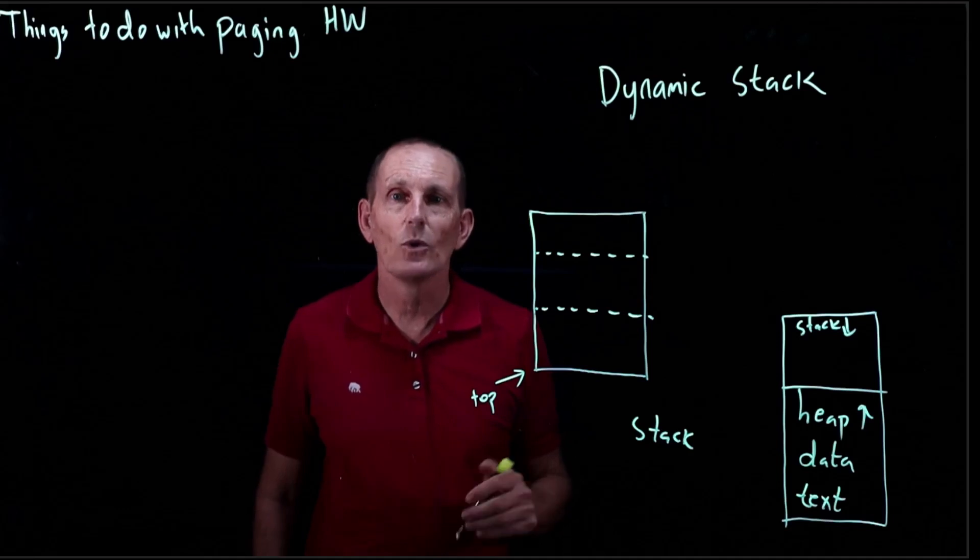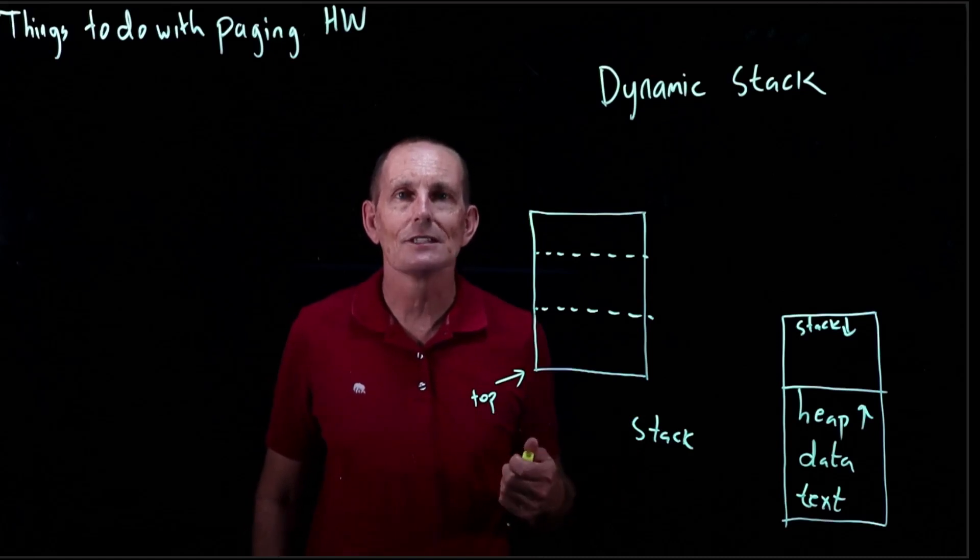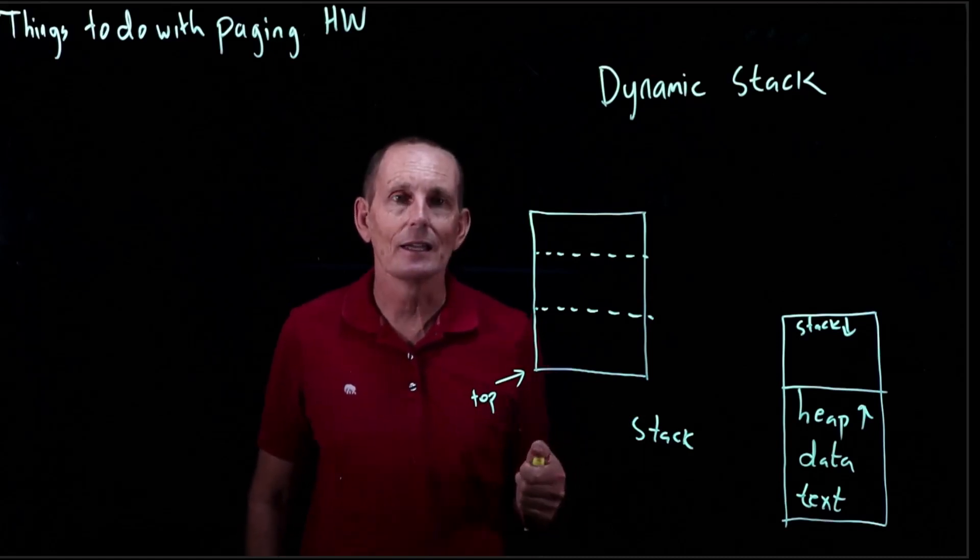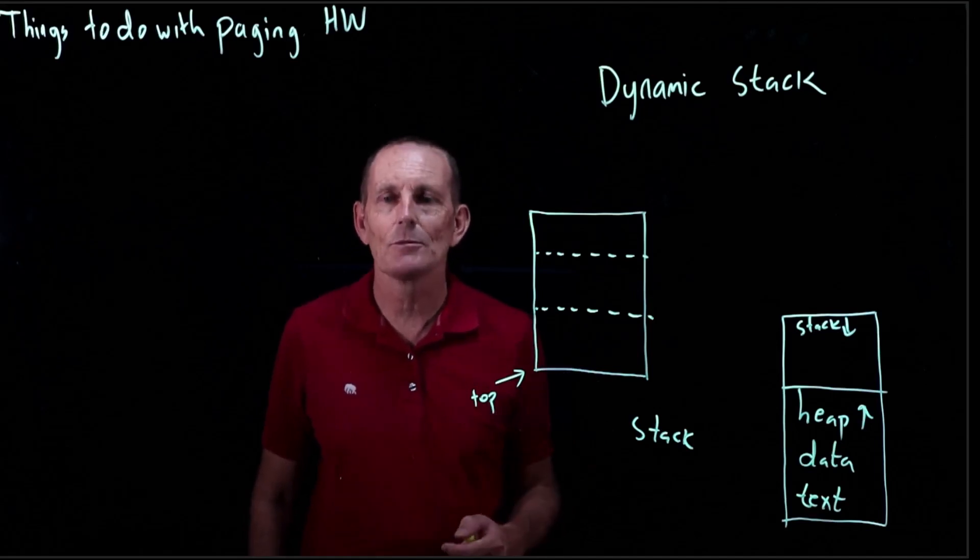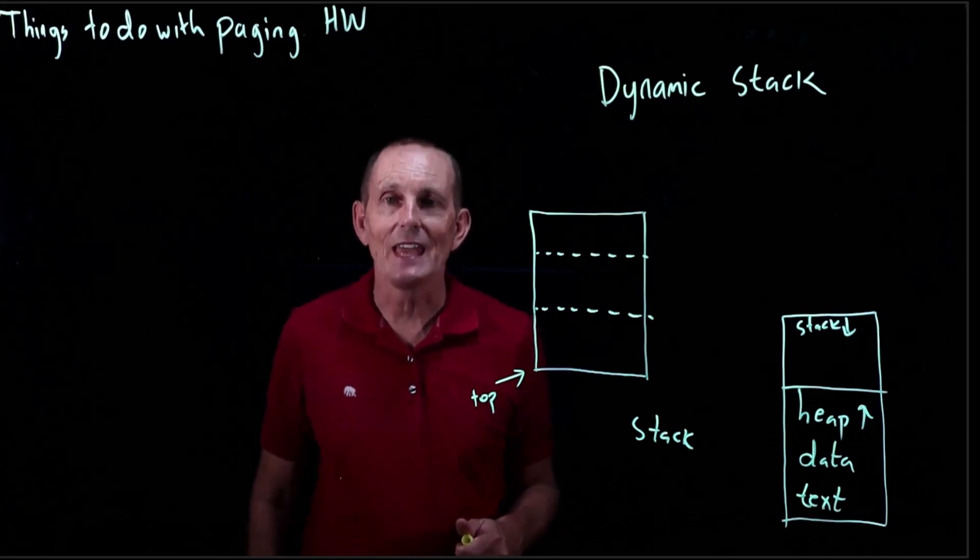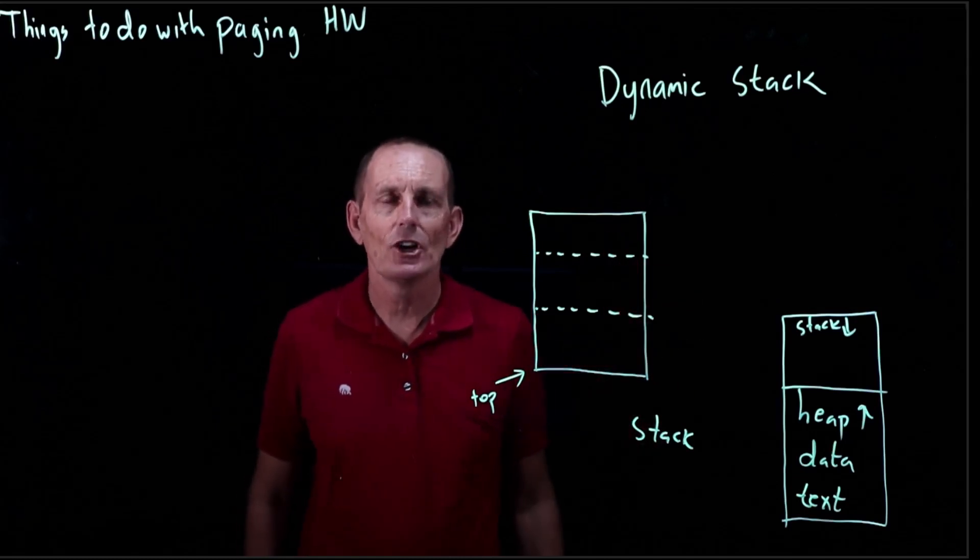So the idea is what we do is when there's an interaction with the stack, a read or write to the stack that has not yet been allocated, we will get a page fault exception. The kernel gets the page fault exception. The kernel looks at the address of the access, finds that it's within the stack area and says, oh, right.